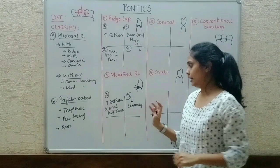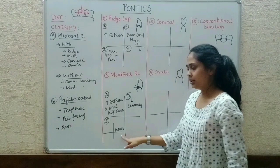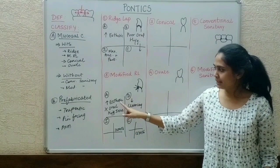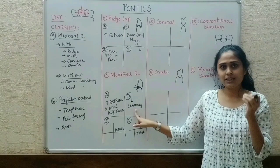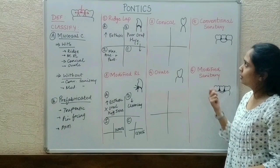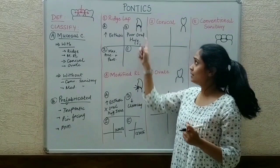For indications and contraindications: the modified ridge lap is given in maxillary anteriors, premolars, and molars. The contraindication is that it should not be given in mandibular anteriors, posteriors, and premolars — because while it is aesthetic, it has a cleansing problem, and in the posterior mandibular region or areas without aesthetic concern we should not use it. Also, since tissue surface coverage is less here compared to ridge lap, tissue inflammation is reduced accordingly.